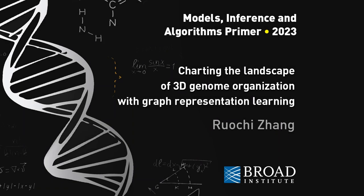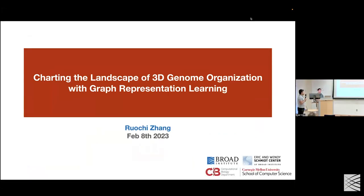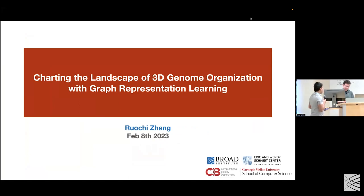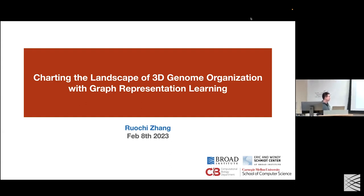Welcome to MIA. We're going to have a session today on machine learning for the 3D genome. This is a very interactive session, so I encourage you to ask questions — please get a mic or come up to one of the mics so everybody can hear you on Zoom. Our first speaker today is Rochi Zach, an Eric and Wendy Schmidt Fellow here at the Broad Institute. He's done pioneering work in his PhD on graph representation learning for 3D genome organization at Carnegie Mellon.